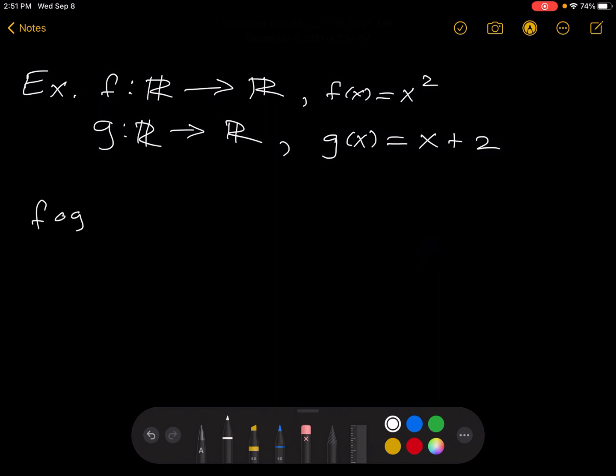f composed with g of x, by definition, is f of g of x. And so now the idea is we're going to plug g of x into f. So we're going to find f of the rule x plus 2.